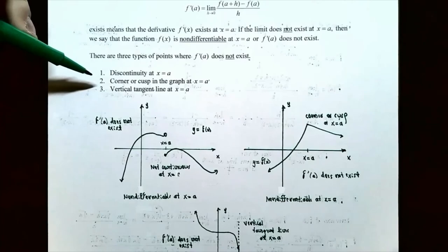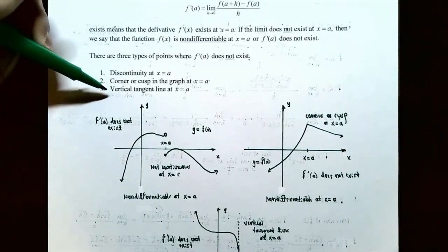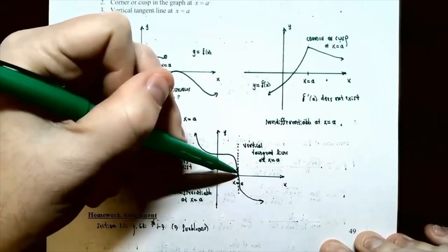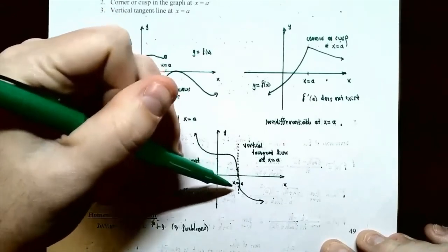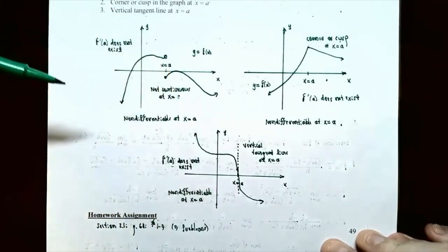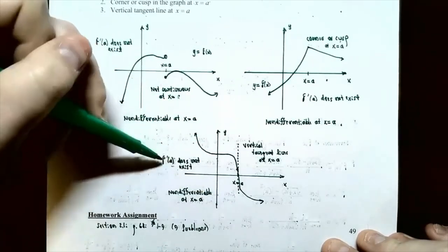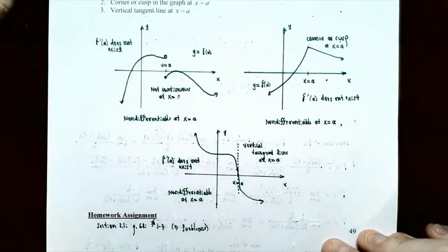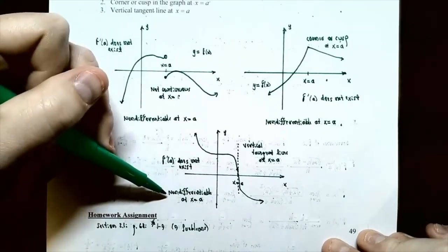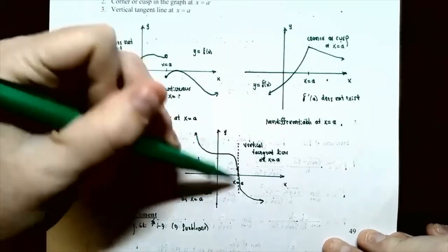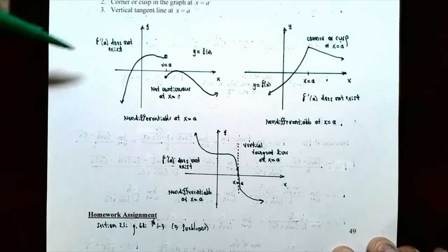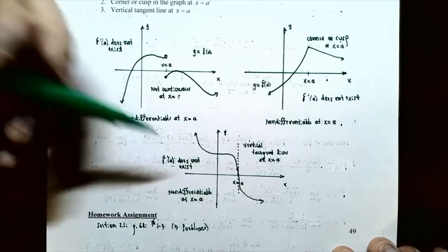The third case where the function is not differentiable is where you have a vertical tangent line at x equals a. At x equals a, if you draw a tangent line and that tangent line is vertical, the slope of a vertical line is undefined. That means the derivative at x equals a does not exist, and the function is non-differentiable there. So the three ways the limit of the difference quotient fails: discontinuities, a corner or cusp, or a vertical tangent line.